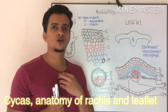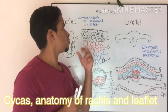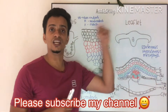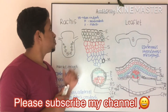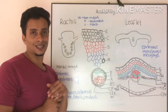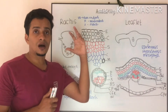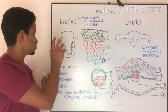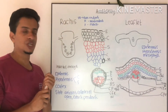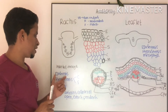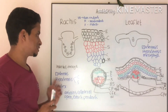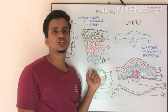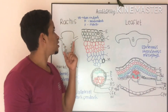Now we are going to discuss the internal anatomy of rachis and leaflet. Coming to the internal anatomy of rachis, the outline will be like this. It is differentiated into epidermis, hypodermis, cortex, and stele. This is the enlarged view of rachis.